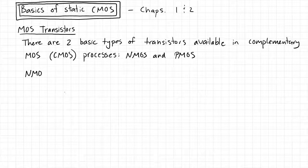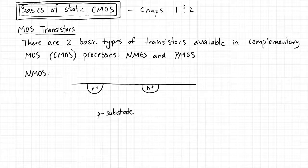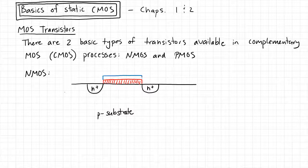Let's take a look first at the NMOS transistor. We can draw a cross section of what that transistor looks like. We have silicon that is doped in the P-form, then N-plus regions where it's heavily doped N. On top of this we have a gate dielectric material, and on top of that we have an actual metal gate.